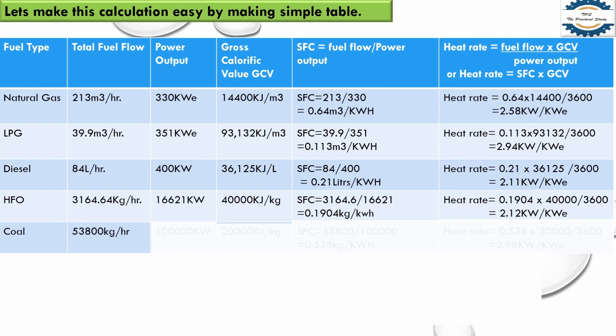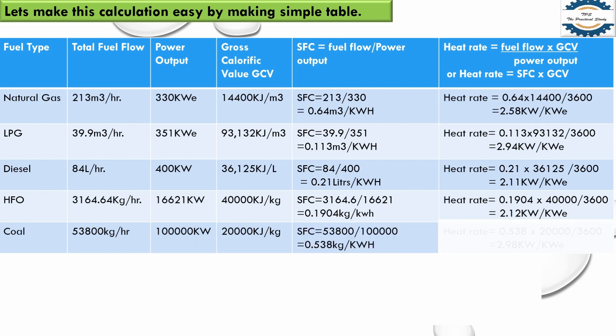For the coal power plant, the fuel flow is 53,800 kilograms per hour and its power output is 100,000 kilowatt — that is, a 100 megawatt power plant, which is quite large, as coal plants typically operate at large scale. The GCV of that coal is 20,000 kilojoule per kg. Dividing fuel flow by power output gives specific fuel consumption, and multiplying by GCV divided by 3,600 gives a heat rate of 2.98 kilowatt per kilowatt electric.